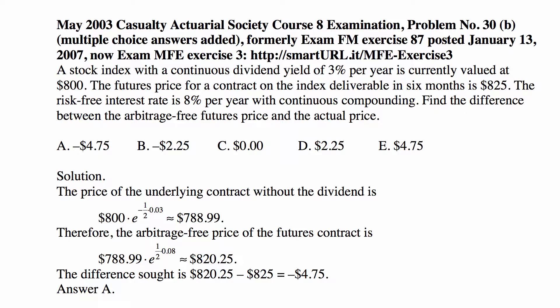The futures price that would require no money to be paid or received up front when you enter into the contract is the same as what we call the forward price — it's the arbitrage-free price of this type of contract. The price of the underlying for this contract without the dividend is $800 times a present value factor for the continuous dividend yield of 3%, so it's $788.99.